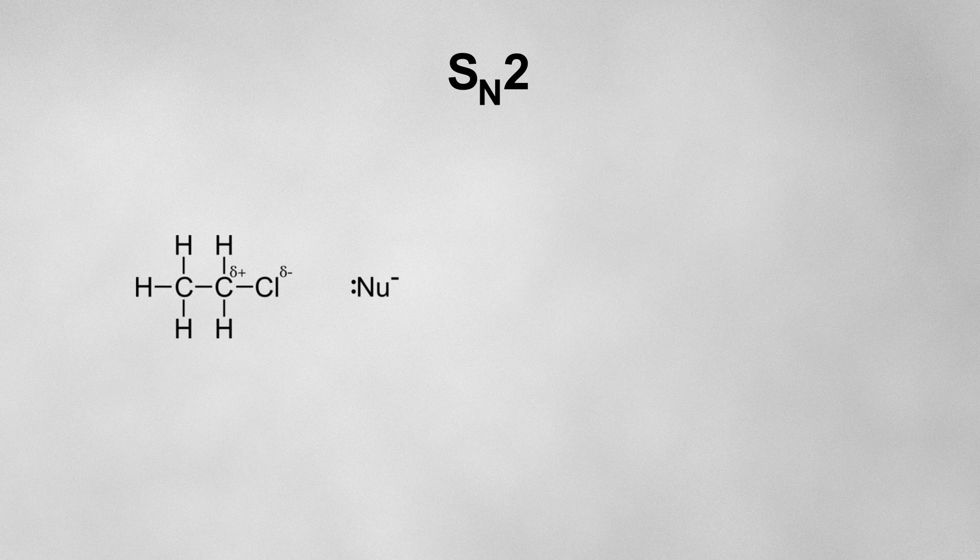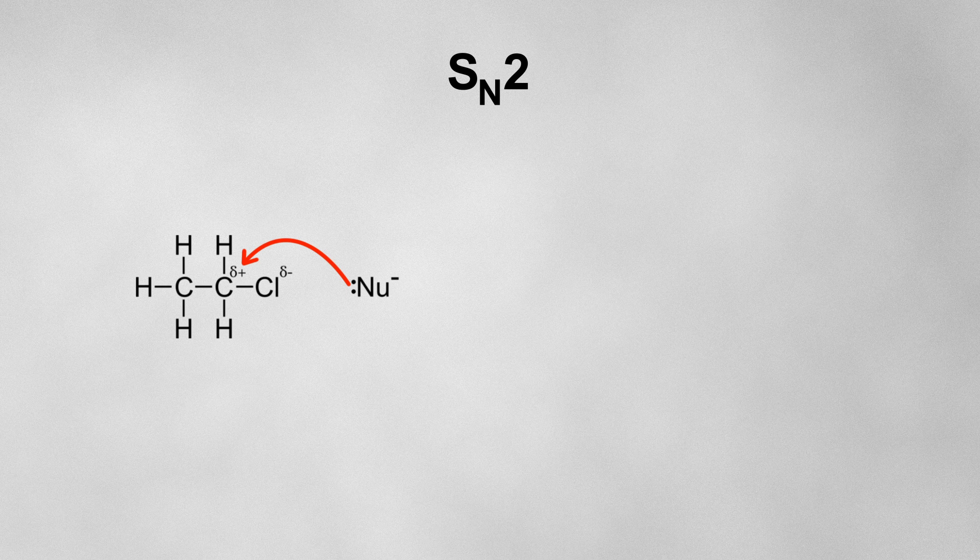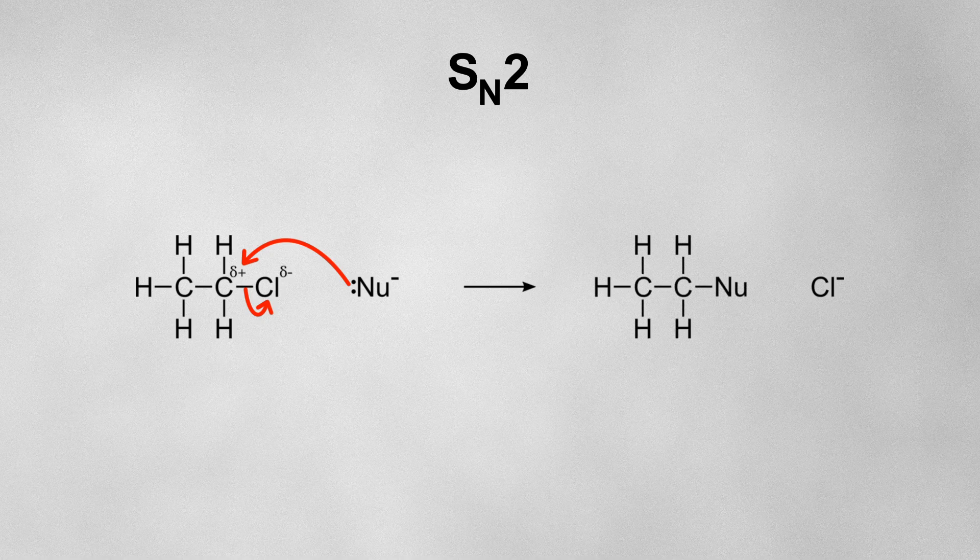In an SN2 reaction, the rate determining step involves two reactants, the halogeno alkane and the nucleophile. The nucleophile will be attracted towards the delta plus carbon and will form a bond with it. This simultaneously repels the electrons in the carbon-halogen bond all the way onto the halogen to kick out a halide ion and leave behind the new molecule.